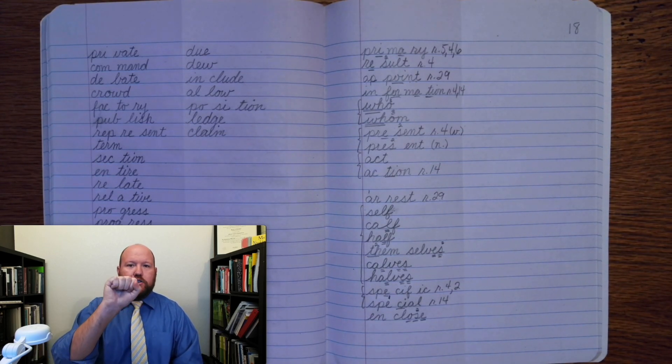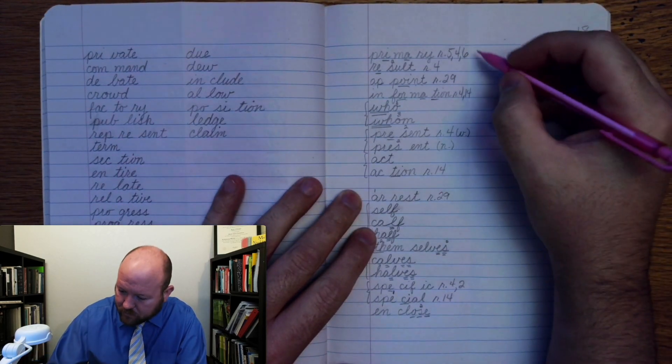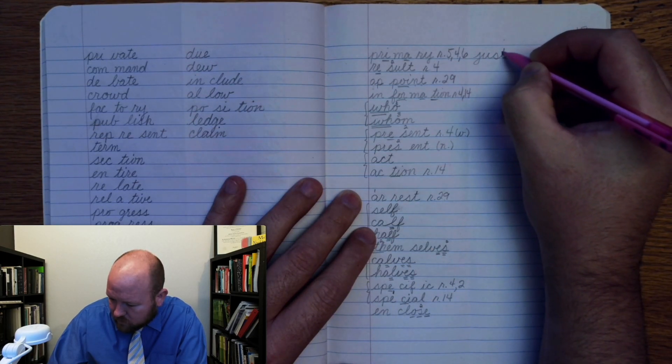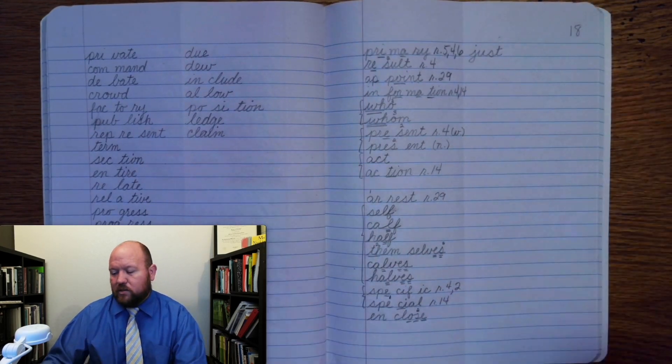Just. Base word, just. J-U-S-T. Just. You write just, J-U-S-T. Just. Markings: J-U-S-T. Just.